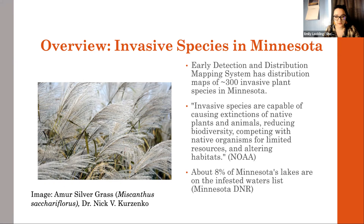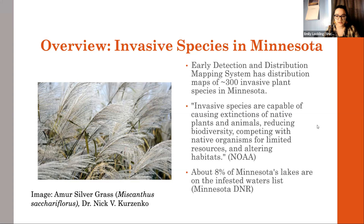An overview of invasive species in Minnesota — we know there's a lot. We hear a lot about buckthorn and zebra mussels, but the range that they reach is actually quite large. There are over 300 invasive plant species in Minnesota mapped by the early detection and distribution mapping system, and about 8% of Minnesota's lakes are on the infested waters list.